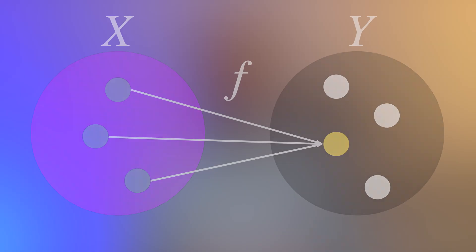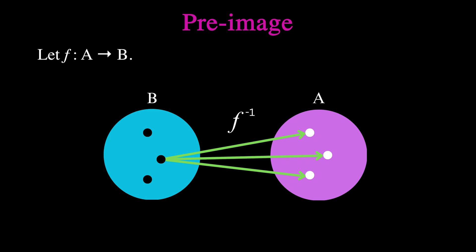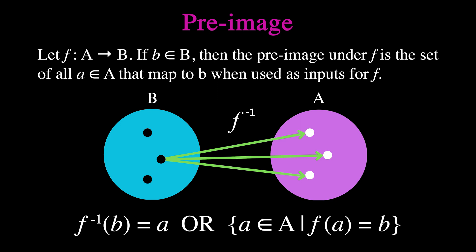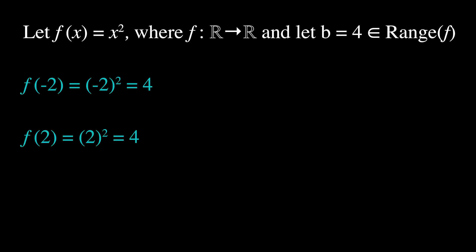Finally, let's talk about pre-images. A pre-image is simply the set of all x values in the domain that get mapped to a particular y value in the codomain — in other words, the set of all inputs that give us a certain output. More specifically, let f be a function mapping elements from a set A to elements in set B. If b is an element in B, then the pre-image of b under f is the set of all elements in A that map to b. The pre-image of b is denoted as f⁻¹(b), or as {a ∈ A : f(a) = b}. For example, let f(x) = x² mapping real numbers to real numbers, and let b = 4. The pre-image of 4 under f is the set {-2, 2}, since f(-2) = 4 and f(2) = 4.